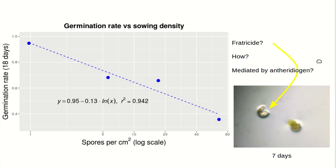You can observe germination failure empirically just by looking in your plates for spores that didn't make it. Here's a sad spore that didn't make it — it dehisced, but was unable to produce any viable contents. That's one example of a germination that failed.